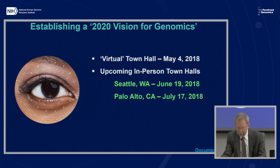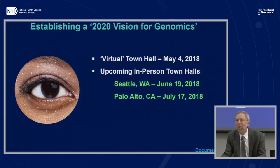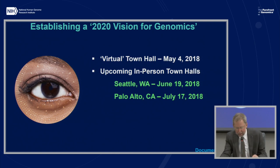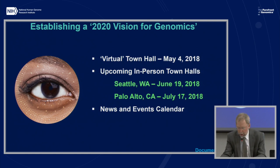There are going to be two in-person town halls over the summer. One will take place in Seattle, Washington in June, and one in Palo Alto, California in July. We welcome those of you in those geographic locations to participate in these first two of what will be a series of traveling town halls, including ones that will take place beyond the west coast. Details about upcoming town halls and other strategic planning events will always be available on the dedicated news and events calendar on the Genomics 2020 website.